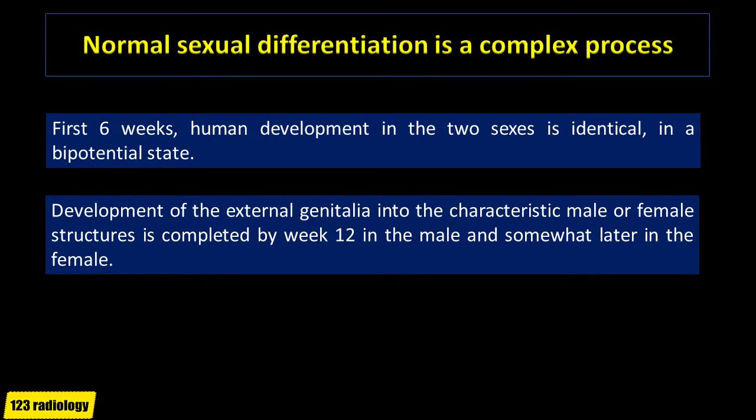In this short talk, we will discuss how to determine normal fetal gender and how to differentiate male from female fetus. As we all know, normal sexual differentiation is a complex process. In the first six weeks of gestation, human development in the two sexes is identical, in a bi-potential state. Subsequent development of the external genitalia into the characteristic male or female structures is completed by week 12 in the male and later in the female.